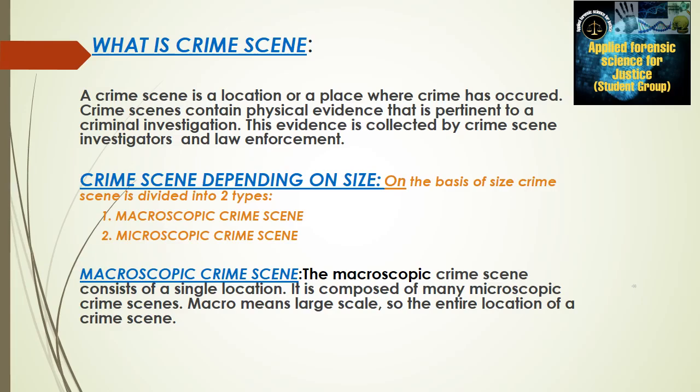Crime scene depending on size: on the basis of size, crime scenes are of two types — macroscopic and microscopic. The macroscopic crime scene consists of a single location and is composed of many microscopic crime scenes. Macro simply means large scale, so the entire location of a crime scene is vast.